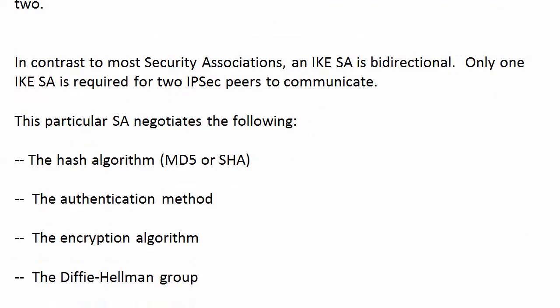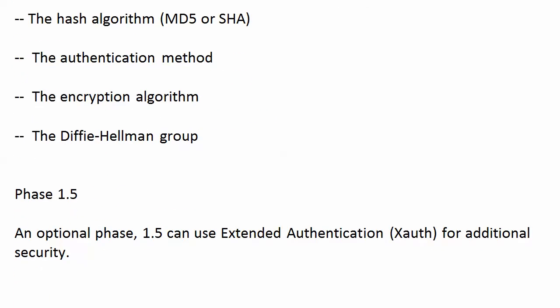This IKE SA negotiates the hash algorithm (MD5 or SHA), the authentication method, the encryption algorithm, and the Diffie-Hellman group to be used. Phase 1.5 is an optional phase that can use extended authentication, or X-auth, for additional security. That one might pop up on your exam, but phases 1 and 2 definitely will.